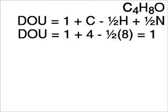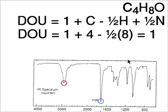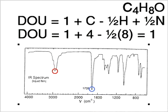And what we can do is take a look at the IR. So here's the IR, and what we see is at 1700, a strong absorption. This type of absorption indicates a carbonyl group, and a carbonyl group has one pi bond, and that accounts for our one degree of unsaturation.